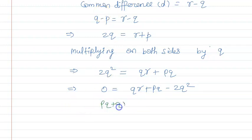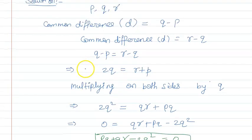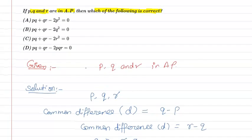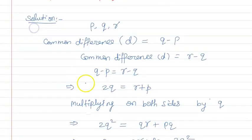That means PQ plus QR minus 2Q² is equal to 0. Option B will be correct answer.